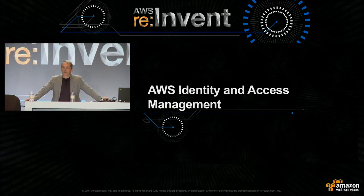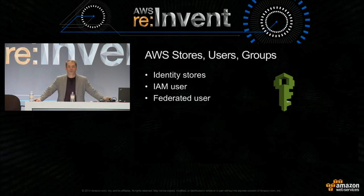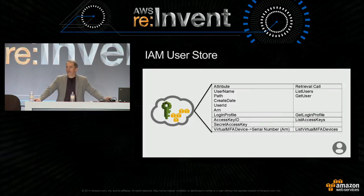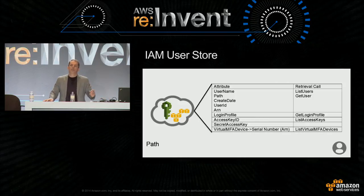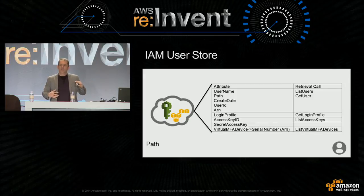Now that we've briefly covered external IAM, let's take a look at AWS IAM. I'm going to talk about identity stores, IAM users and federated users and their associated groups and roles. The first and best known is the IAM user store. The path attribute is particularly interesting—you can use it to map hierarchy. For example, the path might be pingidentity.com/engineering/mobile-devices/OAuth to mimic an organizational hierarchy, which is handy for data synchronization to an on-premises directory store.